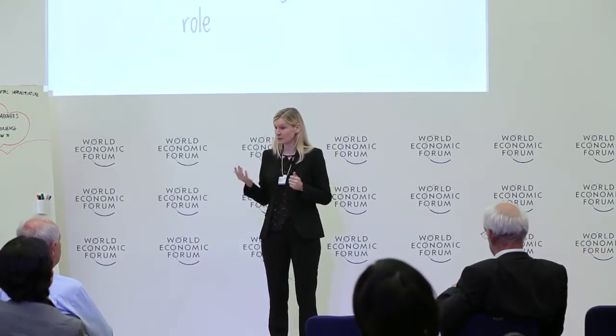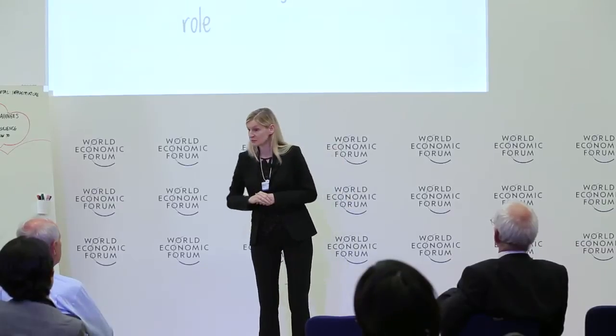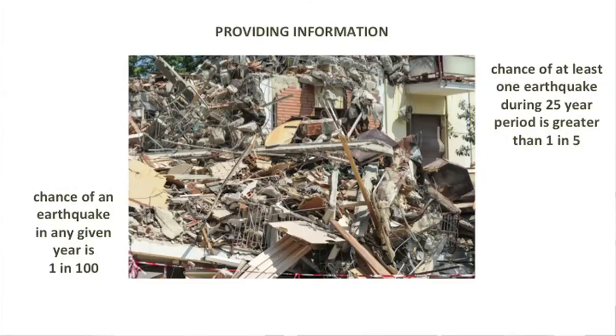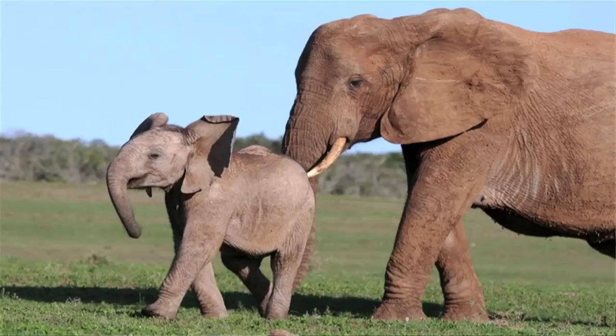How can public policy deal with this? The problem is that policy makers might also be subject to biases like the salience bias, particularly when elections are coming up. But policy tools might include, for example, providing information for better risk assessment. How this information is presented is crucial. Factory owners and homeowners asked about earthquake risk took it much more seriously when told that over a 25-year period the chance of at least one earthquake is greater than one in five, rather than that in any given year the chance is one in a hundred. But there's a thin line between presenting information for accurate risk assessment and framing it in such a way that you nudge people toward a particular decision.